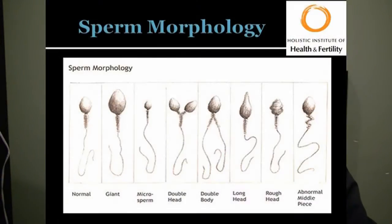This is just a quick overview of sperm morphology, in case you're unclear what they mean when they tell you that you have poor morphology. A normal sperm is shown as our example, and then you have the big sperm, the small sperm, sperm with two heads, sperm with two tails, and then just the misshapen head of the sperm.